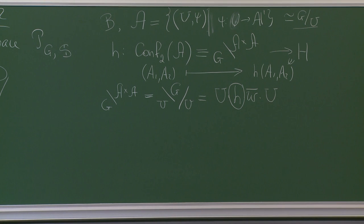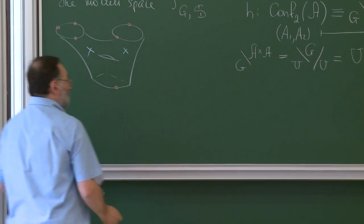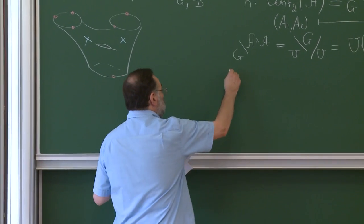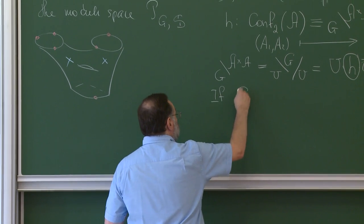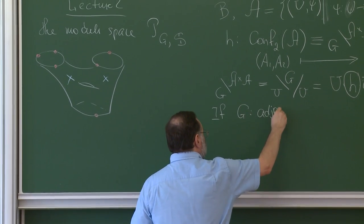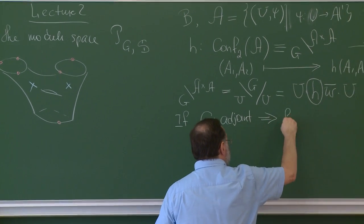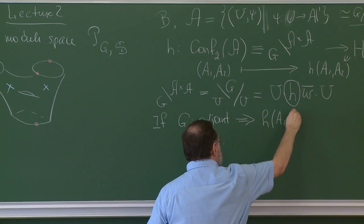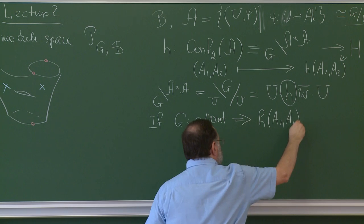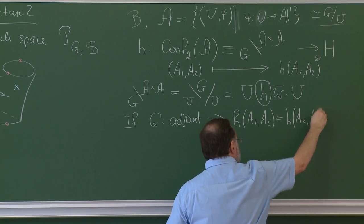It's important that this is a completely canonical map. Since G is an adjoint group, which means it has trivial center, the map H is symmetric: H of A1, A2 equals H of A2, A1.